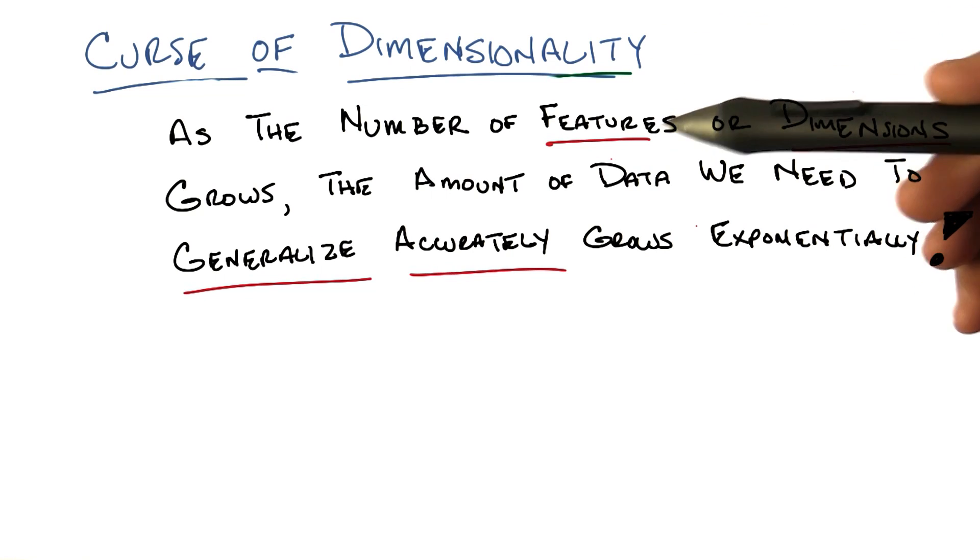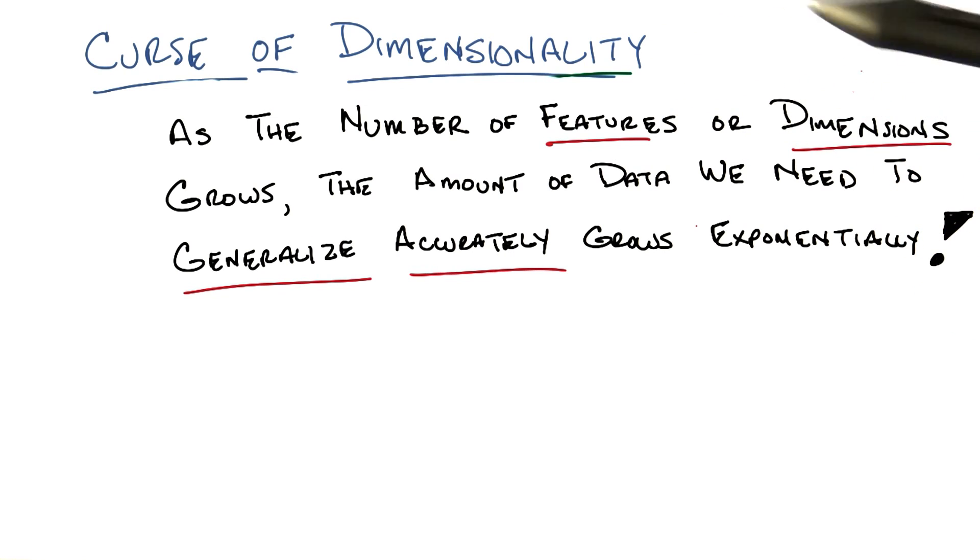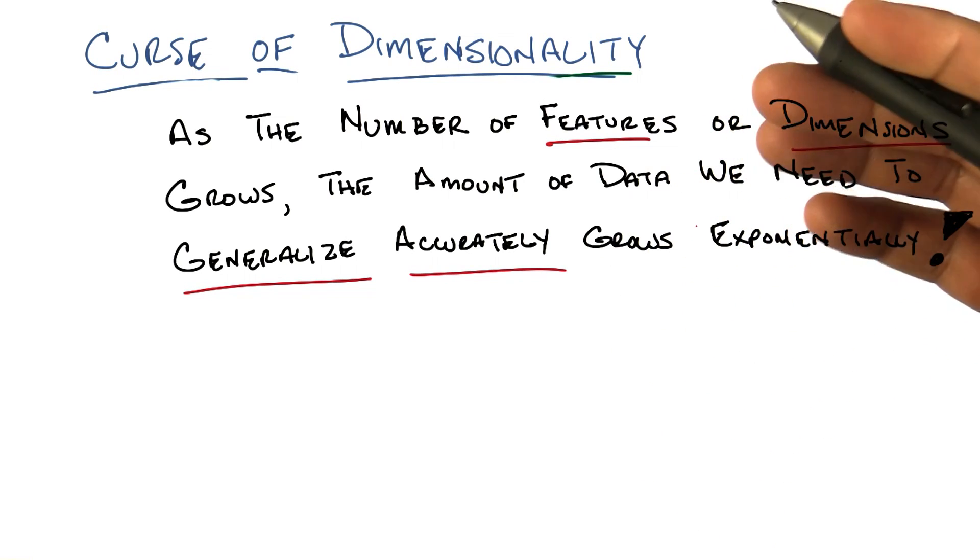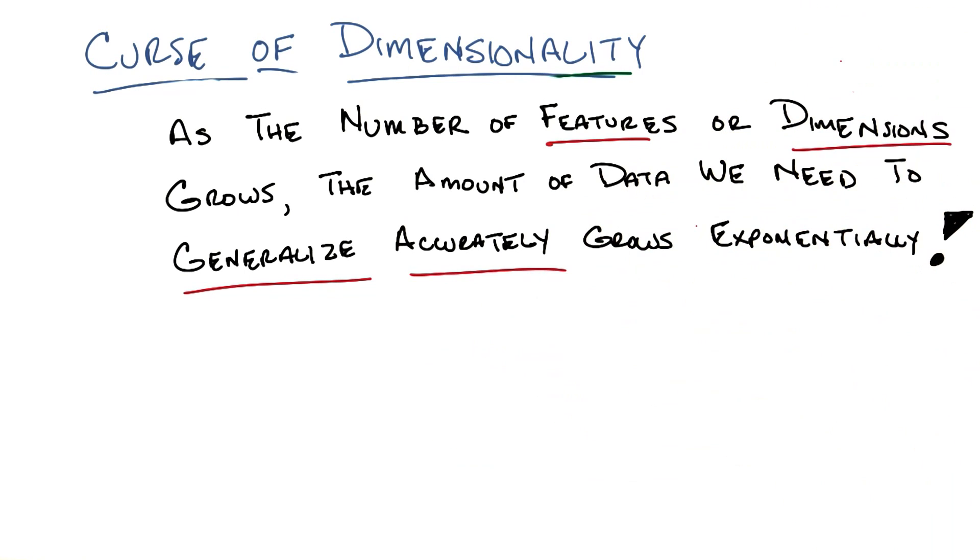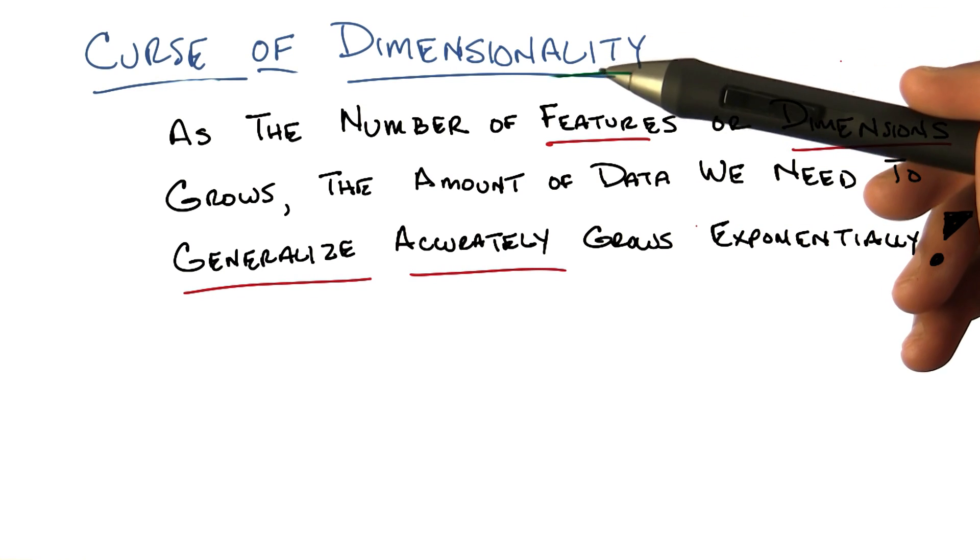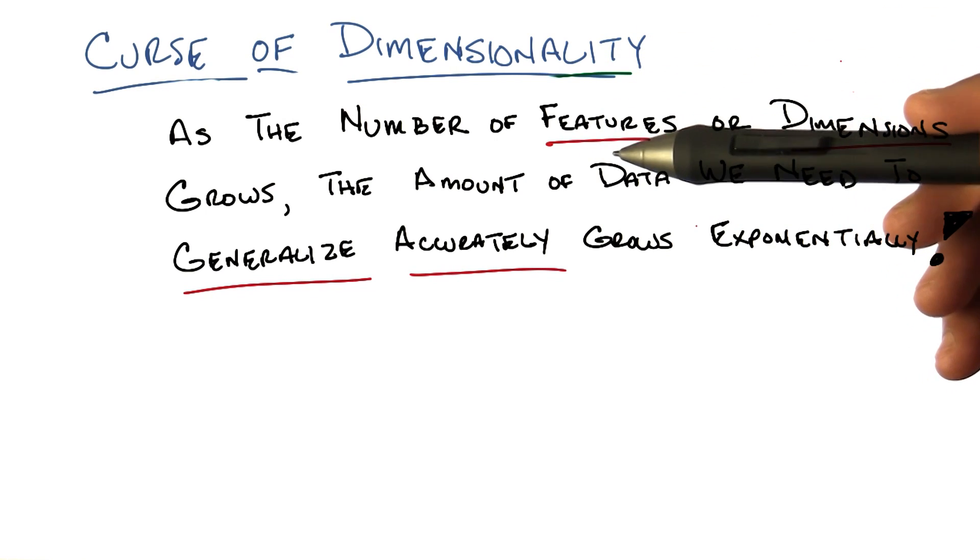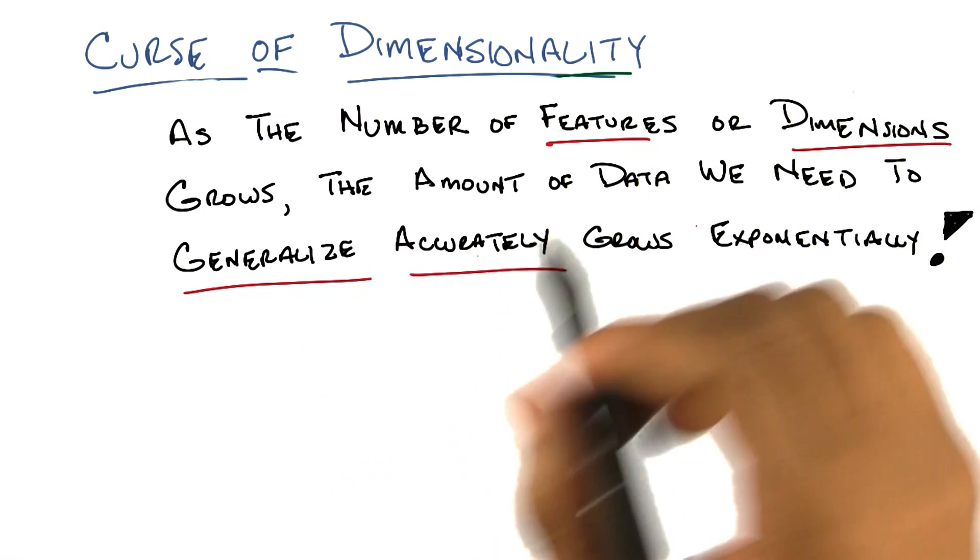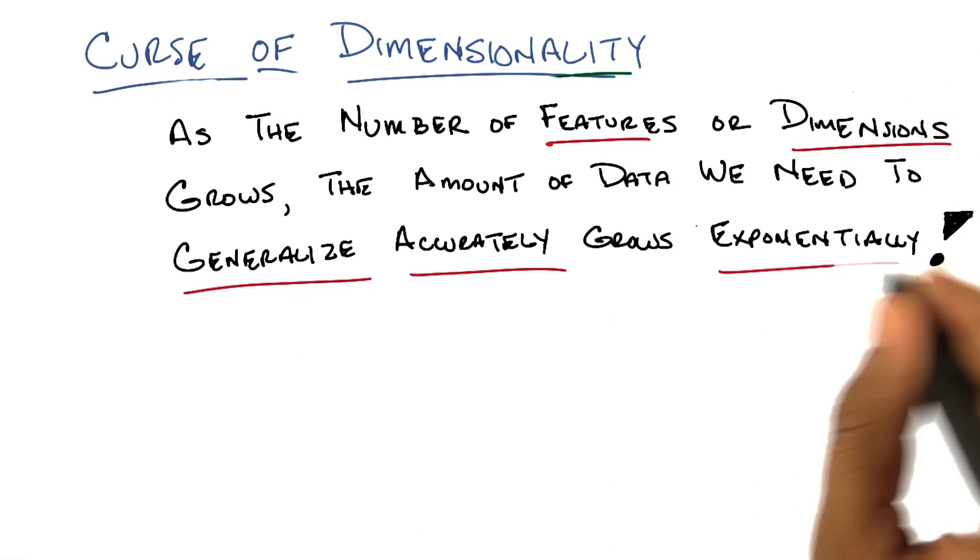As the number of features, or equivalently dimensions, grows, that is as we add more and more features, we go x sub 1, x sub 2, then we add x sub 3, and we add more and more of these features. As those features grow, or as the number of dimensions grow, the amount of data that we need to generalize accurately also grows exponentially.